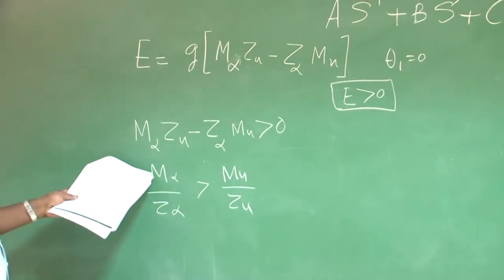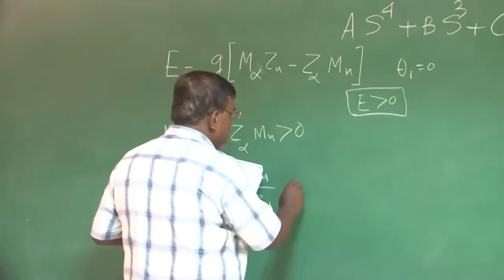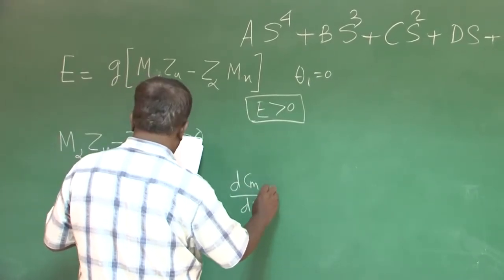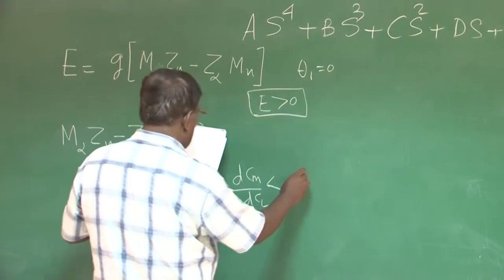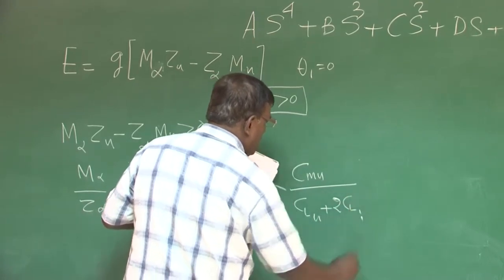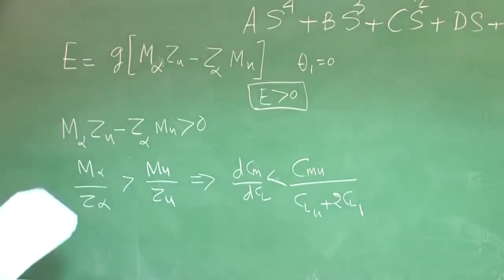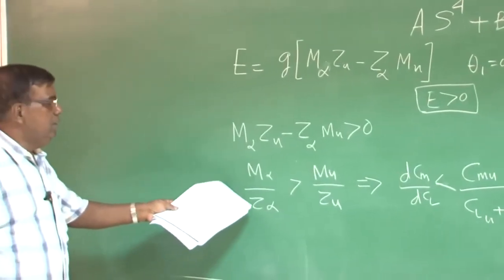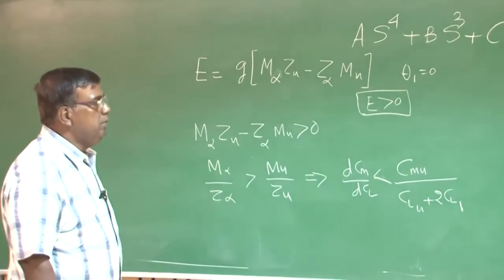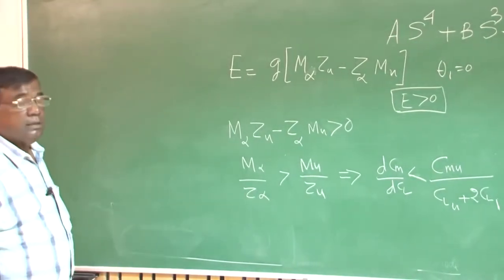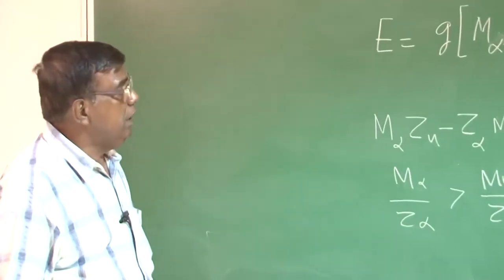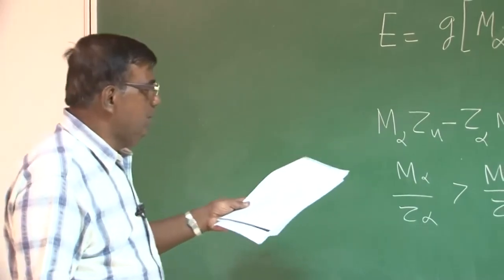Now you substitute the expression of m_α, z_α, m_u and z_u, then you will get this expression as dC_m/dC_l less than C_m_u by (C_l_u plus 2C_l_1). I am sure you should be able to do it. You have to simply mechanically substitute the expressions. Please derive yourself. If you have some difficulty, you can go back to my last course on static stability and static stability of the aircraft. I am sure it does not take extra effort to do all these things.